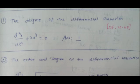The degree of differential equation d²x/dt² plus 2x³ equal to 0. The order is 2, power is 1, so degree is 1.